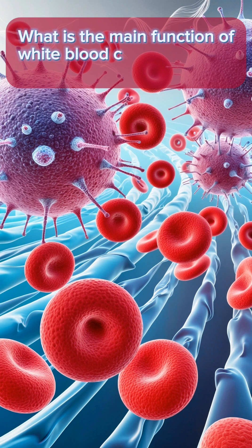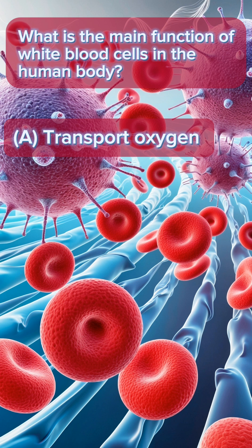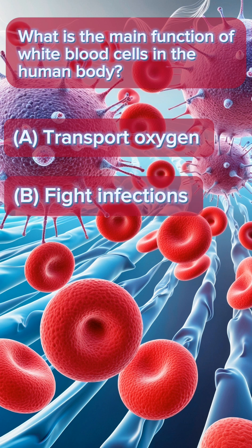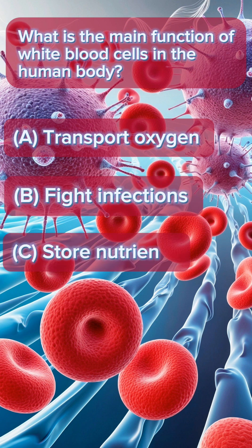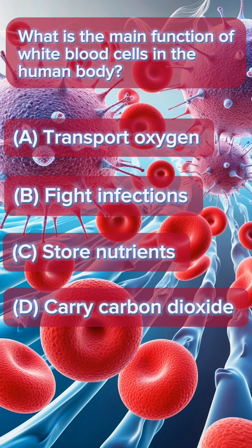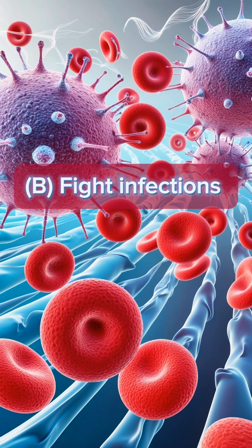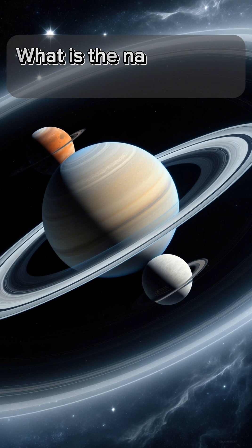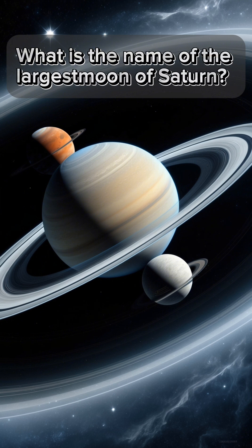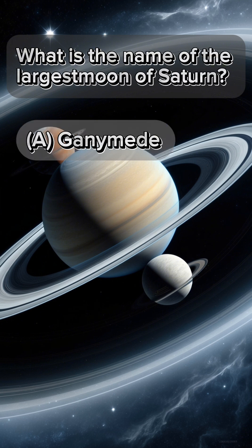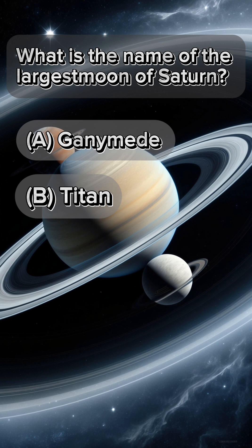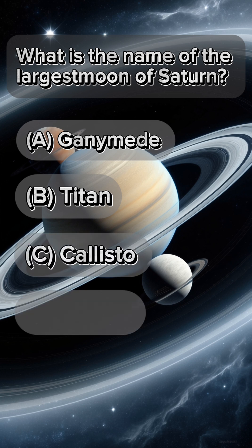What is the main function of white blood cells in the human body? A: transport oxygen, B: fight infections, C: store nutrients, D: carry carbon dioxide. The answer is B: fight infections.